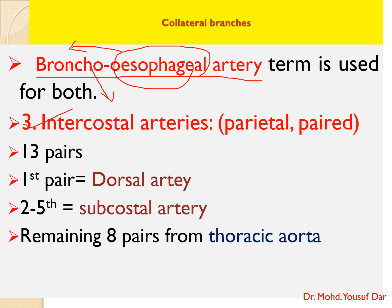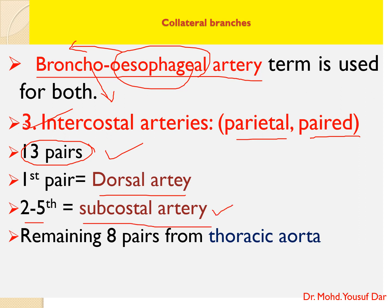The third collateral branch is the intercostal artery. It is a parietal artery and paired. There are generally 13 pairs of intercostal arteries: the first pair arises from the dorsal artery, the second to fifth from the subcostal artery — both being intrathoracic branches of the axillary artery — and the remaining eight pairs arise from the thoracic aorta.